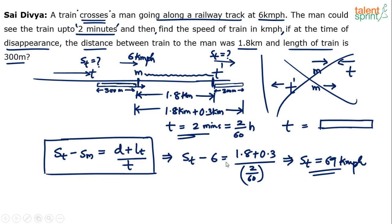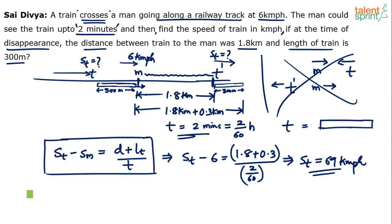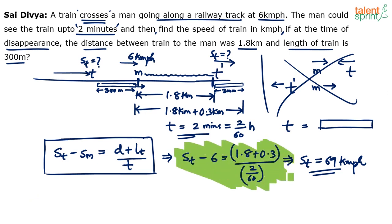Remember we take the difference of speeds because both bodies move in the same direction. If they were moving in opposite directions, we would take the sum of speeds. The final answer is 69 kilometers per hour. In the exam, don't write out all this explanation — just put down the key steps, do the calculation, and write 69 kilometers per hour as the final answer.